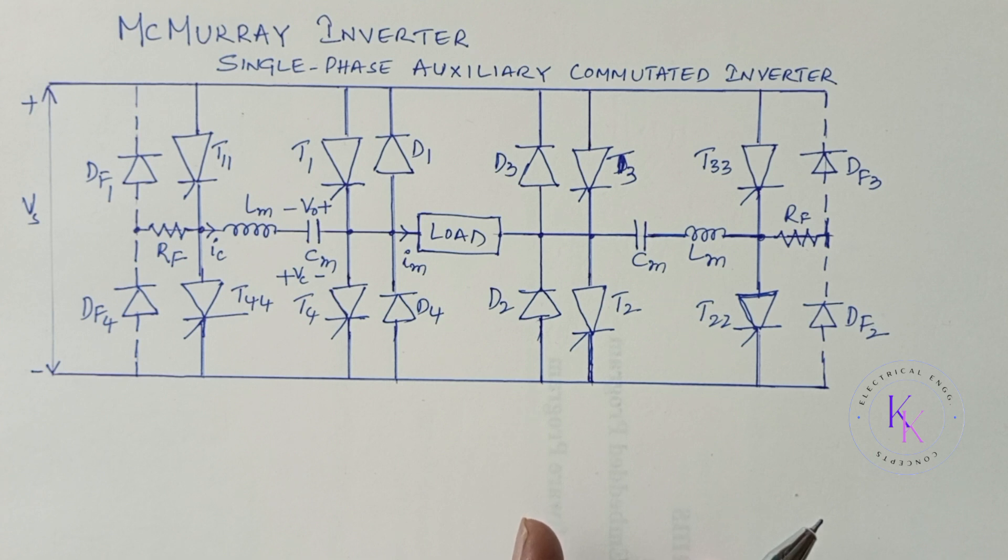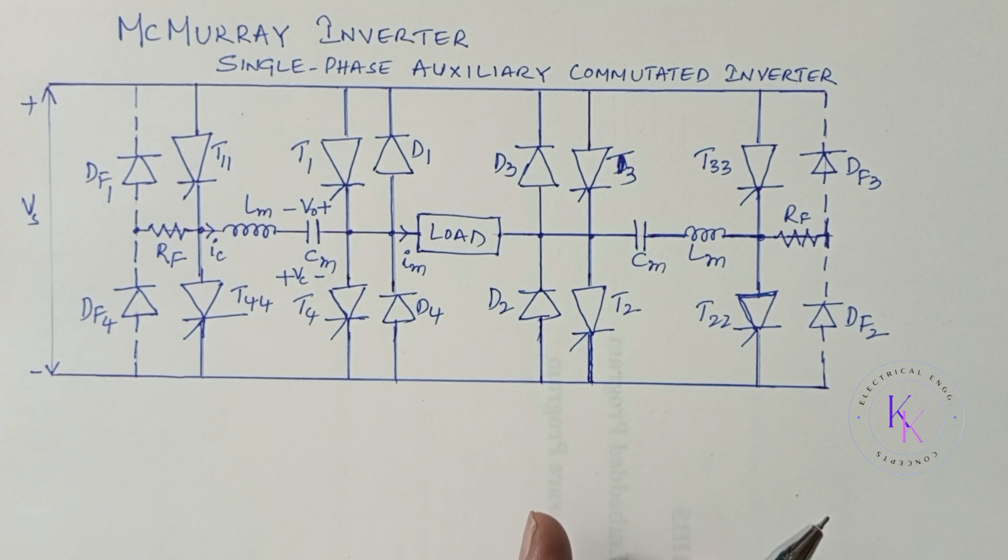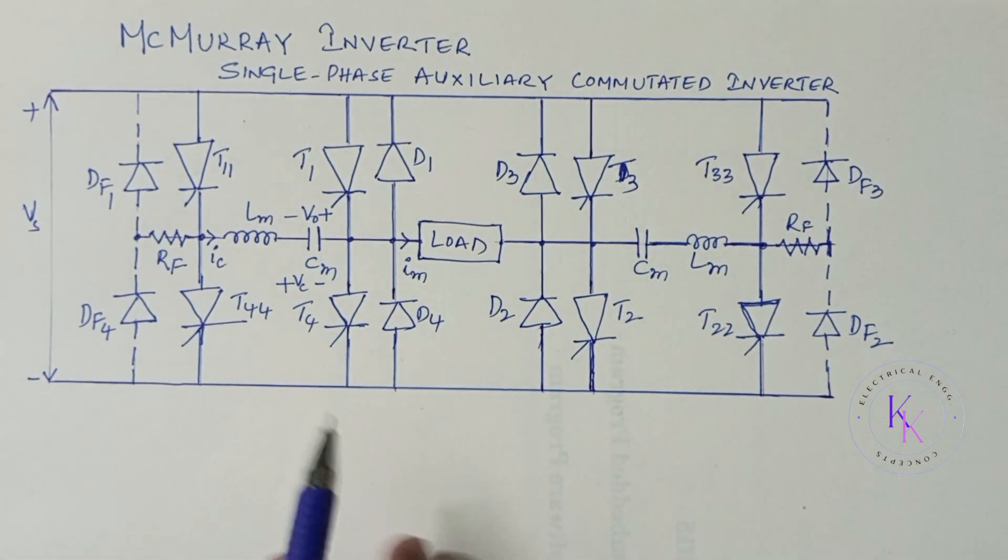Two types of commutation circuits commonly used in inverter applications are the auxiliary commutation inverter and complementary commutated inverter. In this video, we will discuss about the auxiliary commutated inverter which is famously known as McMurray inverter. A single-phase full-bridge thyristor inverter, usually auxiliary commutated as shown in this figure.